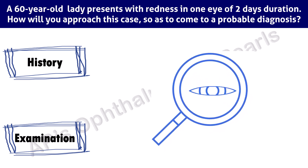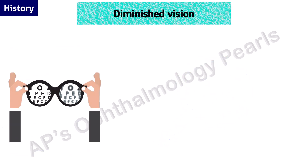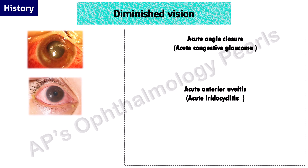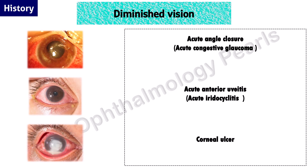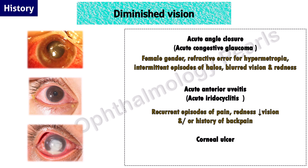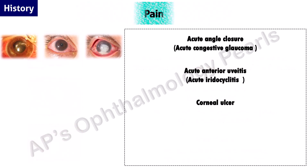If there is a diminution of vision along with the redness, the conditions that come to mind are acute angle closure, acute anterior uveitis, and corneal ulcer. Accordingly, subsequent history may be elicited: female gender and refractive error for hypermetropia, intermittent episodes of halos, blurred vision, and redness for acute angle closure; history of recurrent episodes of pain, redness, diminution of vision, or history of back pain for acute iridocyclitis; and history of trauma, contact lens wear, diabetes, or history suggestive of dacryocystitis for corneal ulcer.